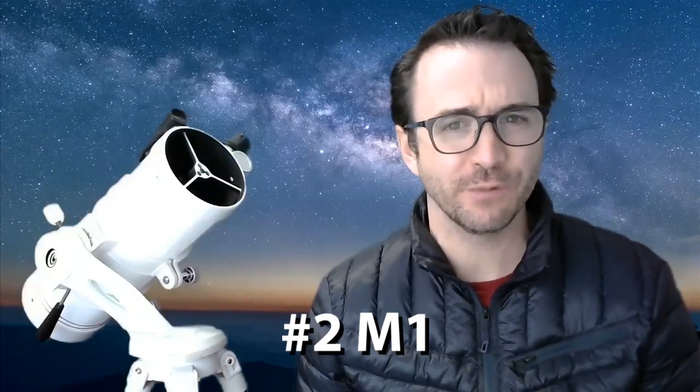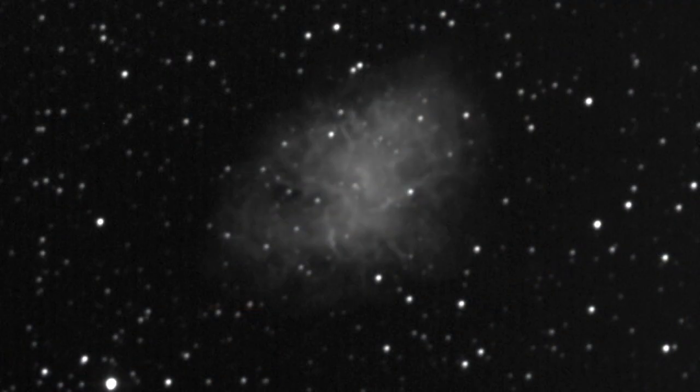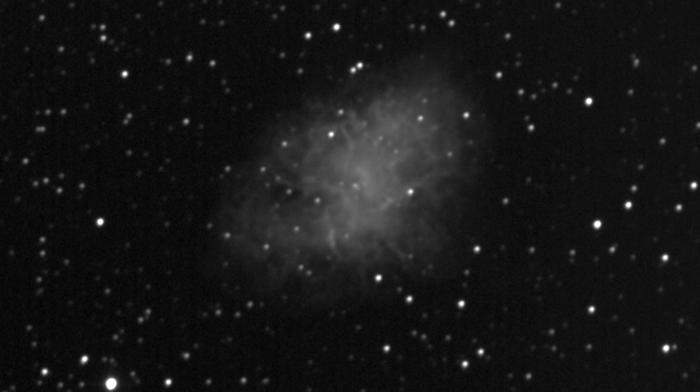M1 is a supernova remnant. A supernova occurs when a large star explodes. The supernova event that created M1 was observed by Chinese astronomers in the year 1054. If we look at an image of this nebula from my school's telescope, it looks like this. And you can sort of see how it got its name, the Crab Nebula, due to its sort of twisty arms.